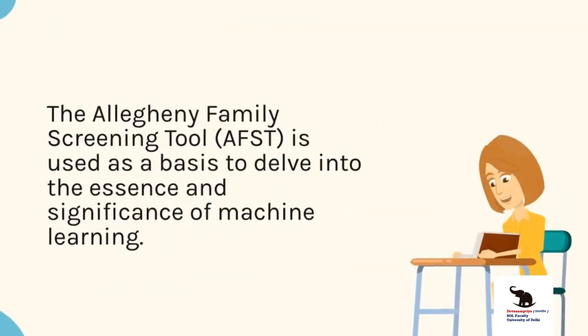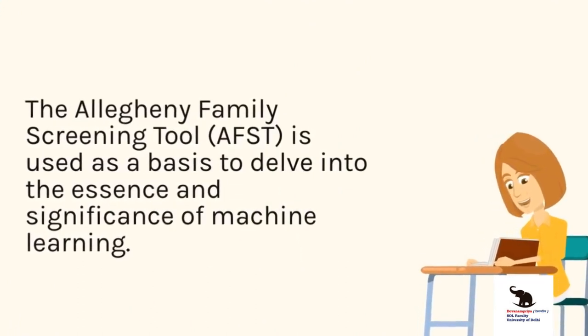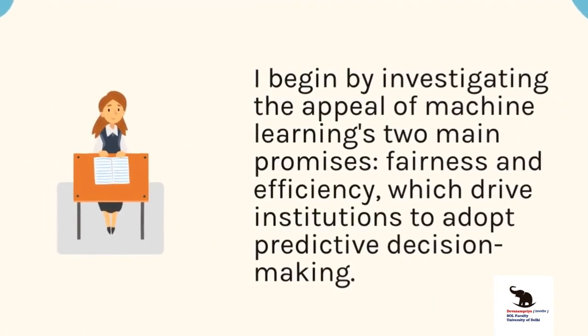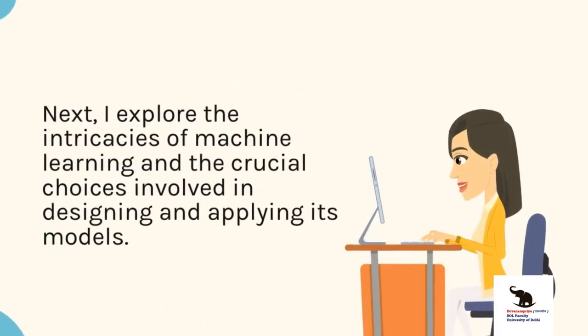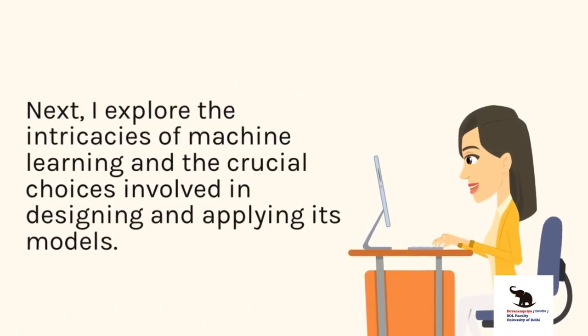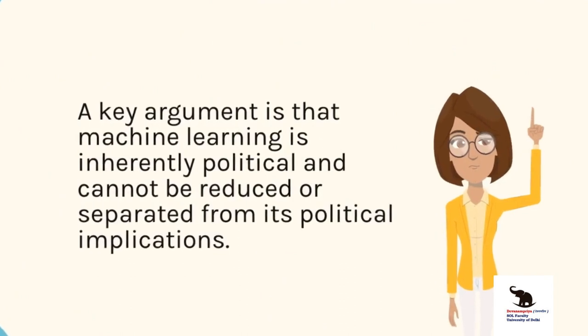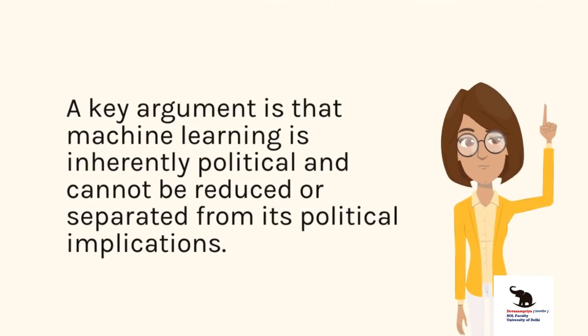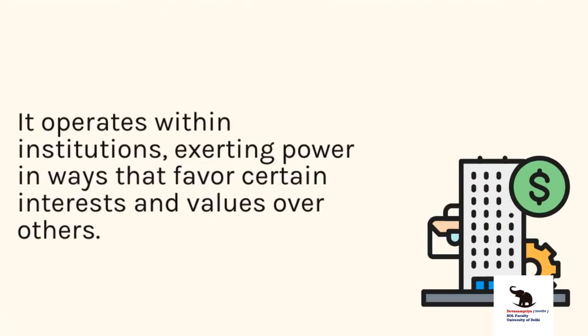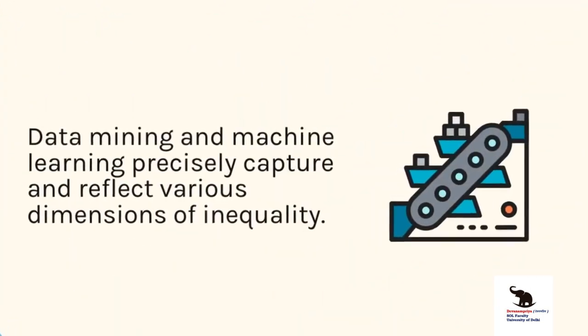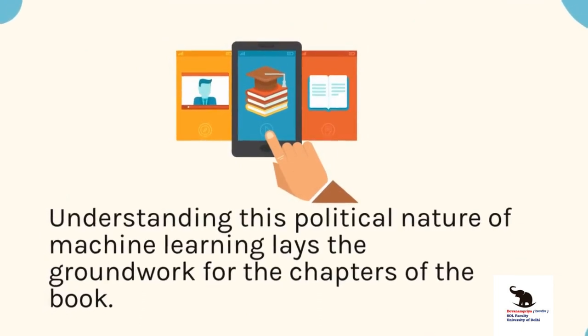The Allegheny Family Screening Tool (AFST) is used as a basis to delve into the essence and significance of machine learning. The appeal of machine learning rests on two main promises — fairness and efficiency — which drive institutions to adopt predictive decision-making. A key argument is that machine learning is inherently political and cannot be separated from its political implications. It operates within institutions, exerting power in ways that favor certain interests and values over others, and data mining and machine learning precisely capture and reflect various dimensions of inequality.